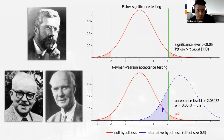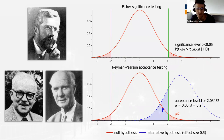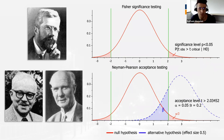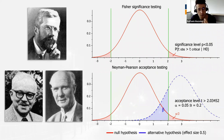As most of you already know, inferential statistics about intervention efficacy in sports science are largely based on traditional hypothesis testing, also known as null hypothesis significance or statistical testing. This framework for decision-making is a hybrid between Fisher significance testing and Neyman-Pearson acceptance testing, and is based mostly on controlling error rates in the long term — meaning, not being wrong in one direction or another more than a given number of times.